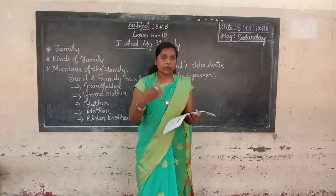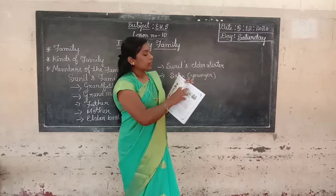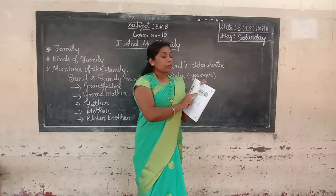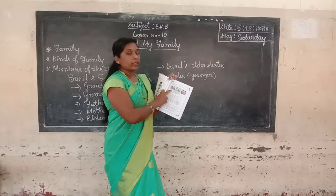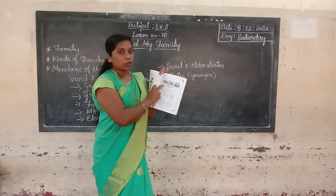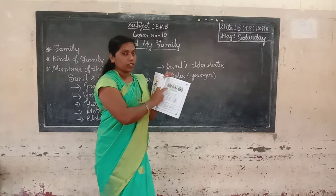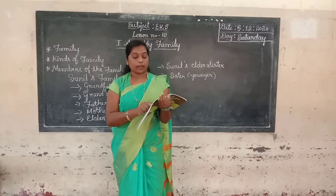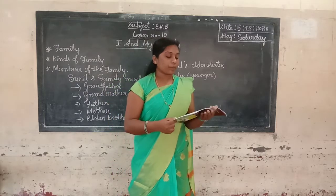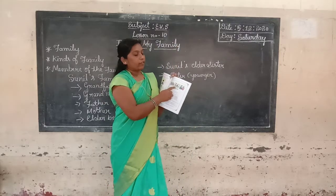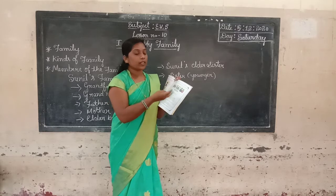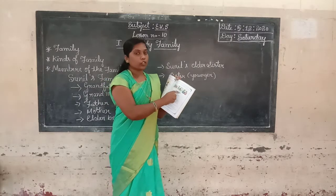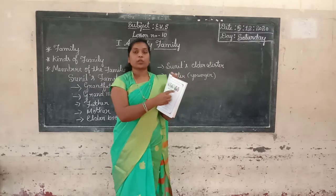Now go to the next page. Identify and tell the people present in the pictures given below. So now you identify the people. This first picture — I think it is a joint family, because here grandparents, parents, and children all live together. The second picture is like a nuclear family — parents and children live together. The third picture is also a nuclear family — father, mother, and only one child live together.